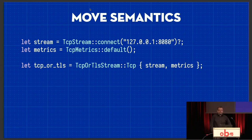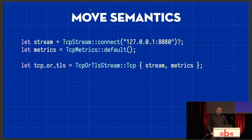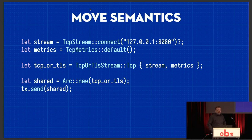Move semantics, which you've all heard of because the compiler told you about it, means that you create a value and then you can move it somewhere else. In this case, we're creating a stream, which technically is created inside the TcpStream::connect function and then moved to us — so that's already a move. We do the same with the metrics, which uses the default trait method and moves the value out. We can move it from the stack — because that's what we did with all these local things — and we can move it onto the heap. Again, it's just a move.